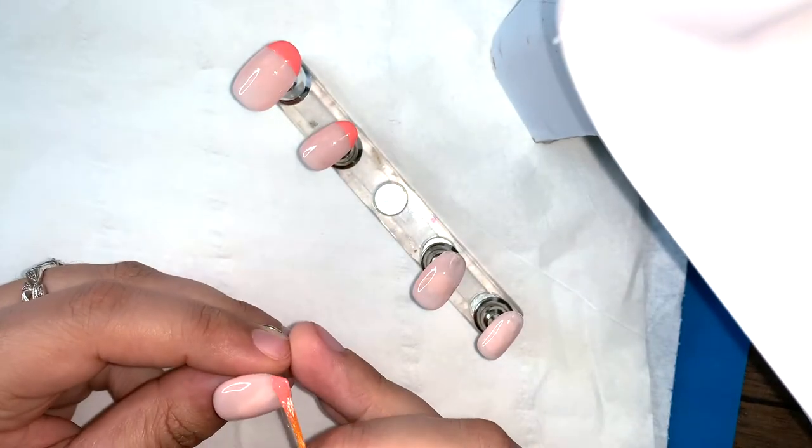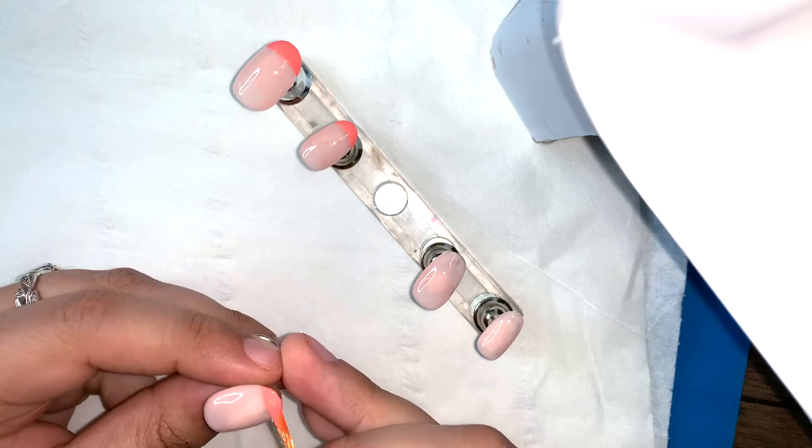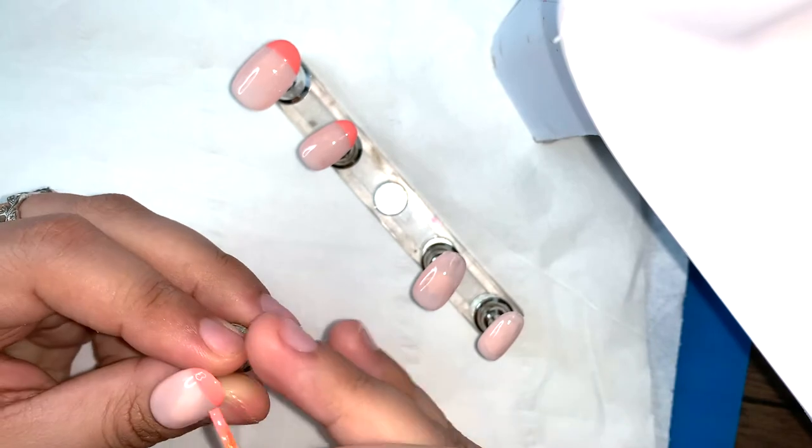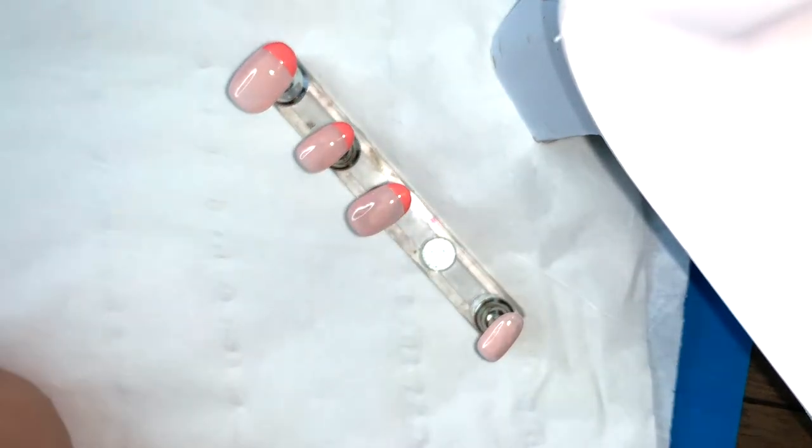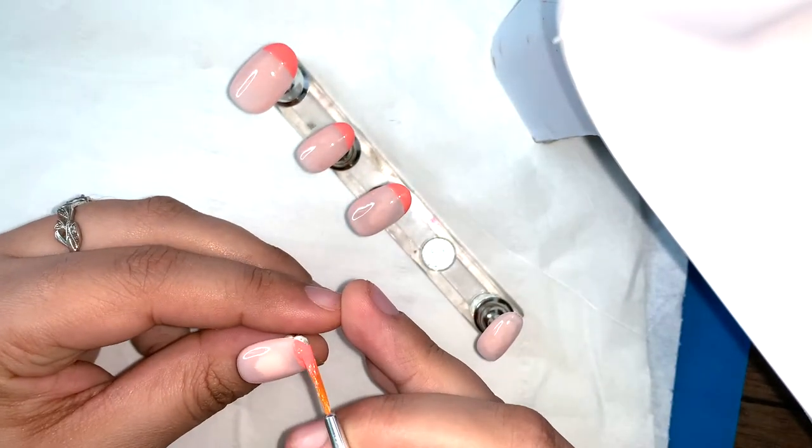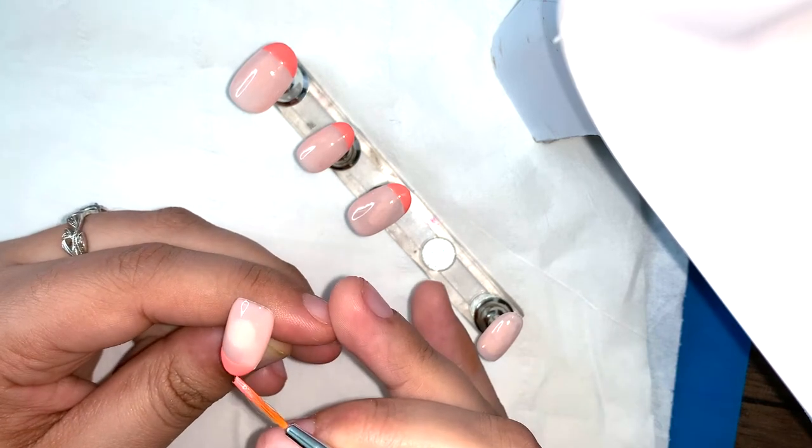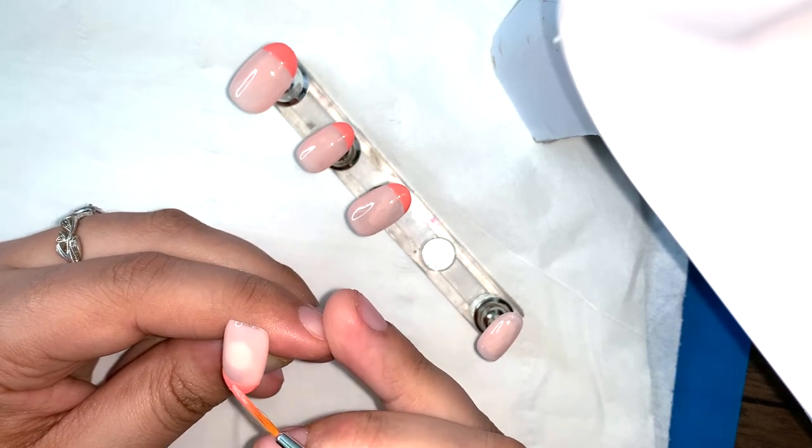All I do is just get a flat brush. I prefer flat brushes, much easier to control, especially if you just want to do a slight smile line for the tip of your nail. So I'll just do that and yeah, it comes out perfect.